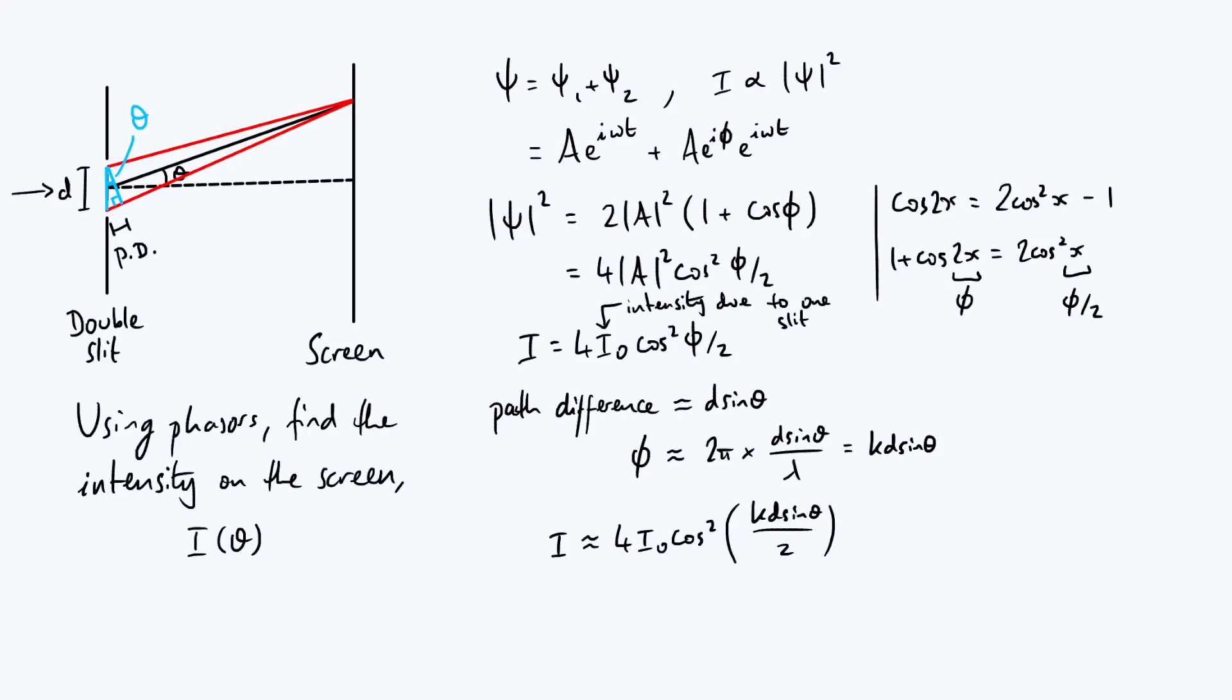So cos squared is just an oscillating function that goes between zero and one, which is consistent with what we said at the very beginning, where we said if it's light, for example, there would be dark patches and light patches just alternating with each other because of the constructive and destructive interference.